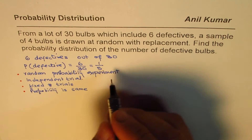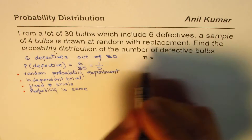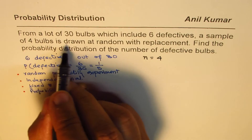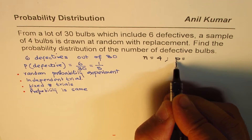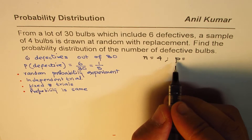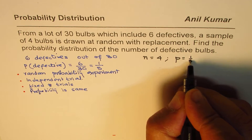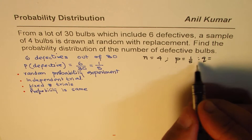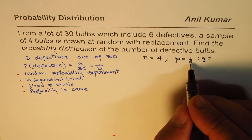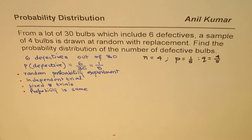Let me write down these parameters. We have n, the fixed number of trials, which is 4, since 4 bulbs are drawn at random with replacement. Lowercase p is the probability of a defective piece, which is 1 over 5. And q will be 1 minus p, so 4 out of 5 will not be defective. That gives us the success and failure probabilities.